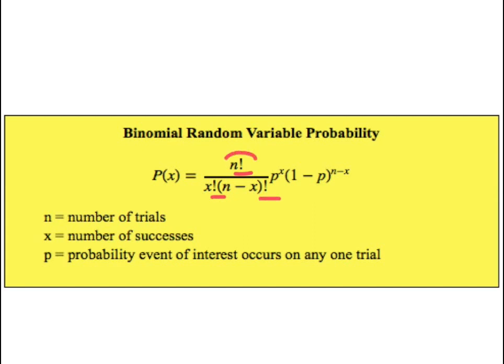The numerator here is what we would call n factorial. The factorial tells you to multiply that number by all of the positive whole numbers less than it. Let's look at a few examples.